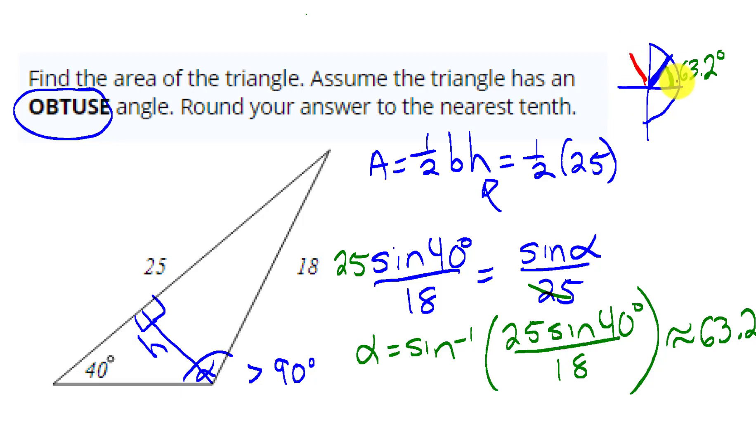Looking at this picture, if I did 180 and I subtracted off that angle of 63.2, I would have the obtuse angle. So I need 180 minus 63.2, and I get 116.8.